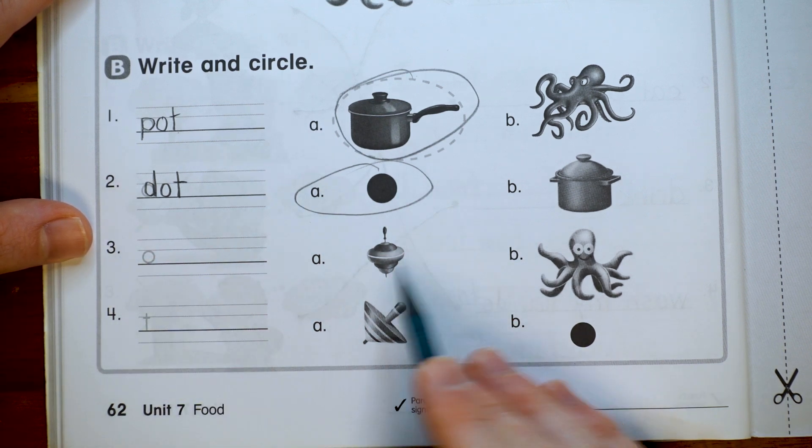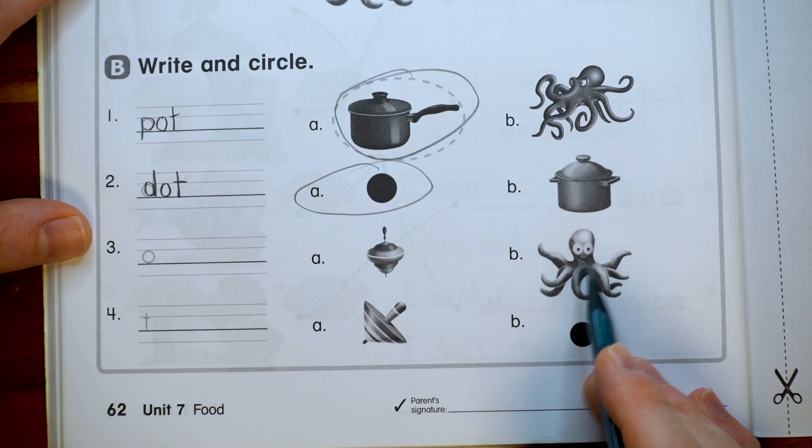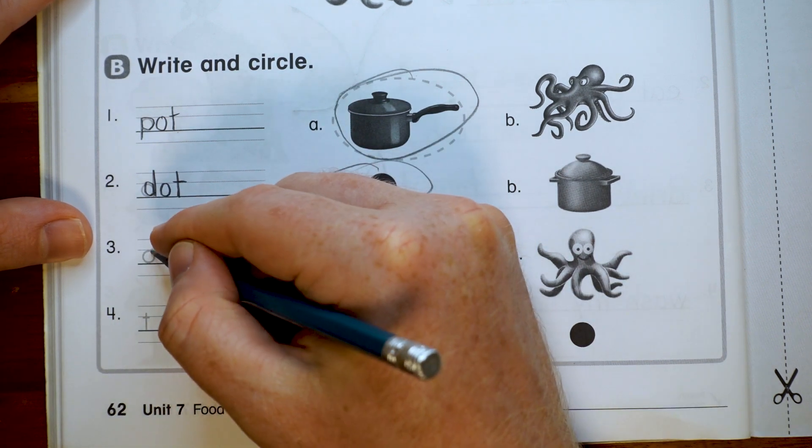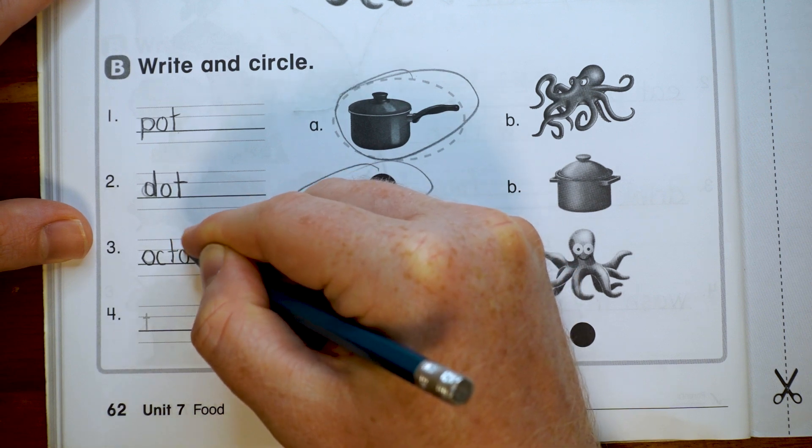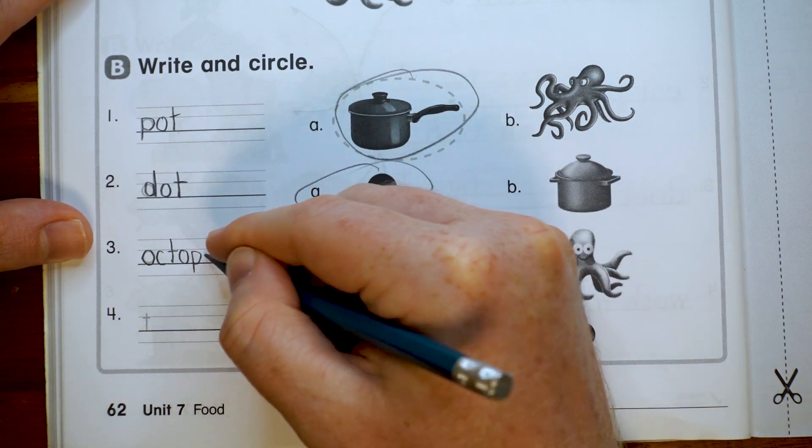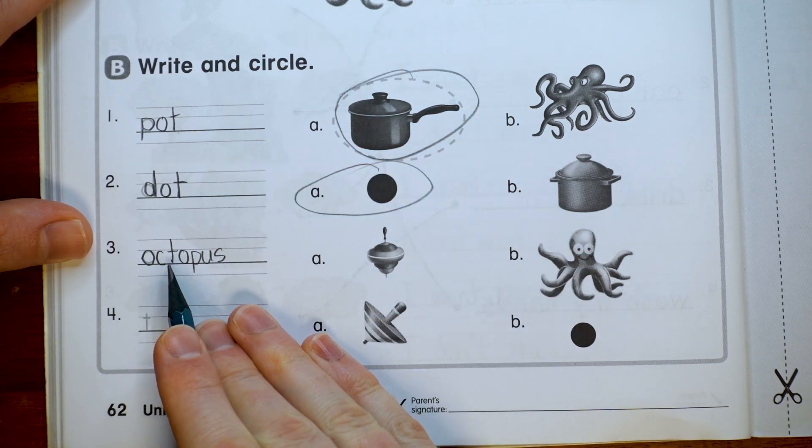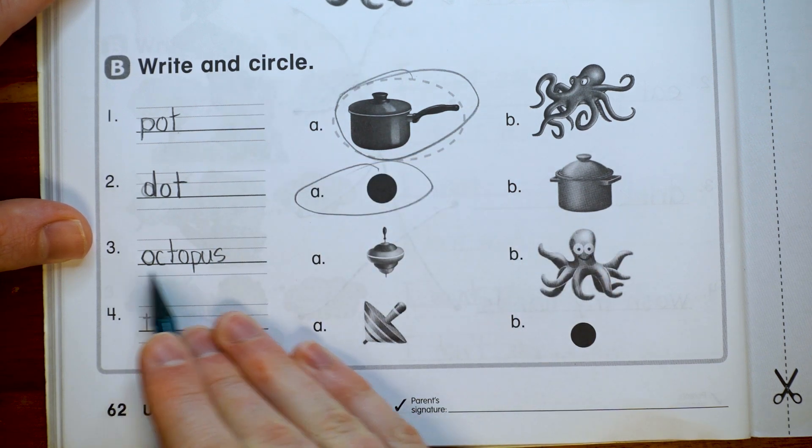Number three starts with an O, so should it be top or octopus? Octopus. Let's write it: octopus.